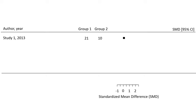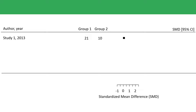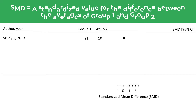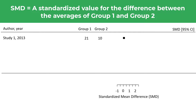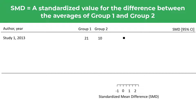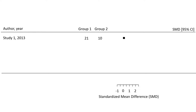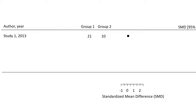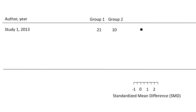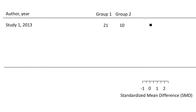More specifically, the standardized mean difference in this example is the standardized mean difference between our measure — the concentration of the protein — in the brains of group 1 and group 2. For study 1, this value is 0.11.